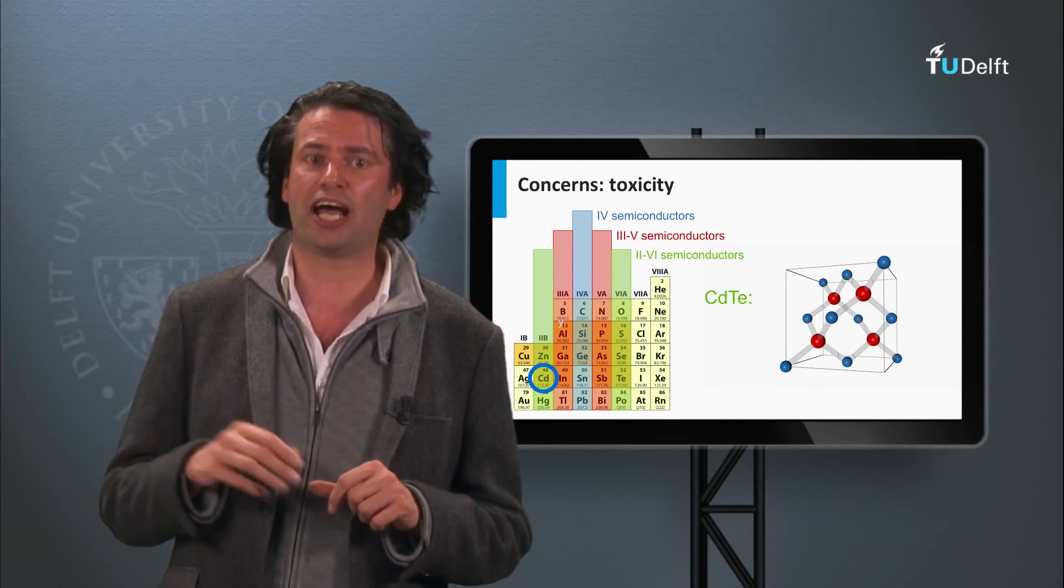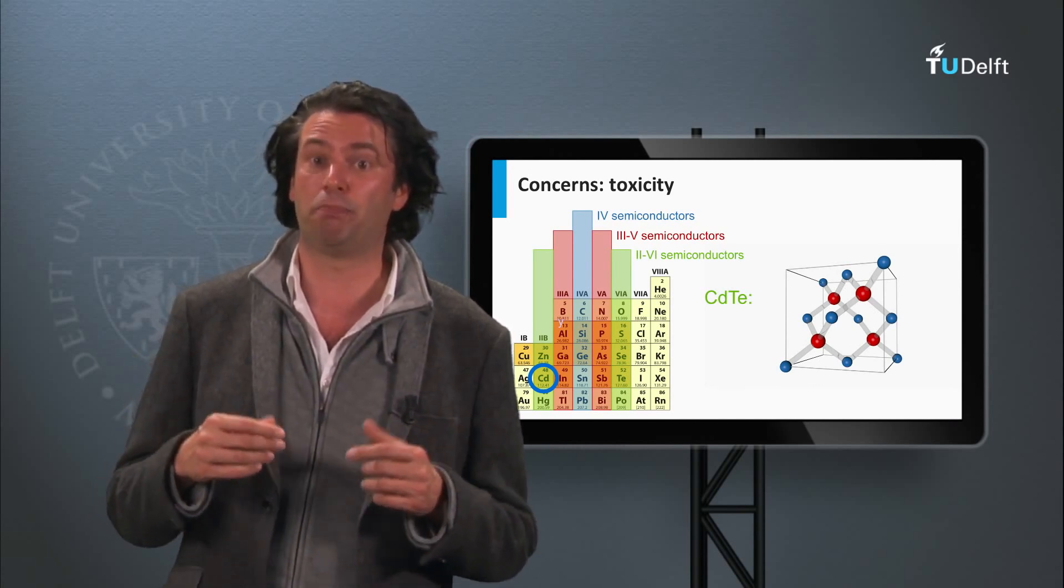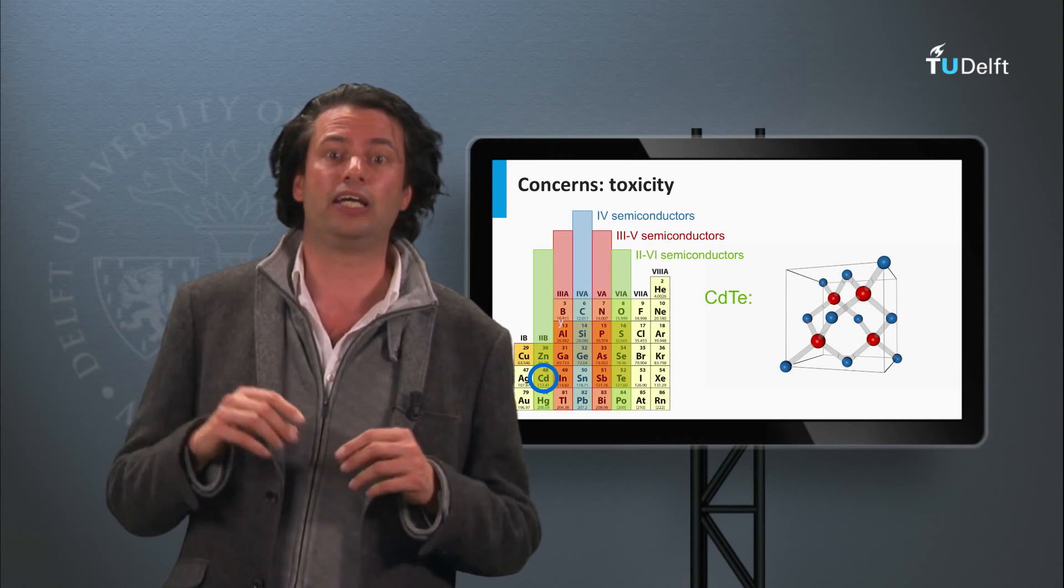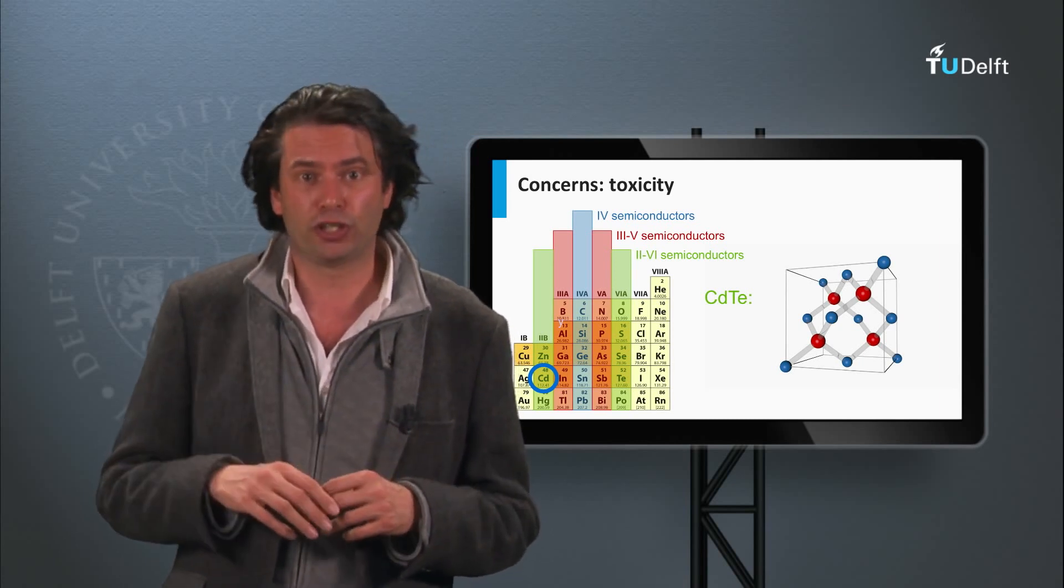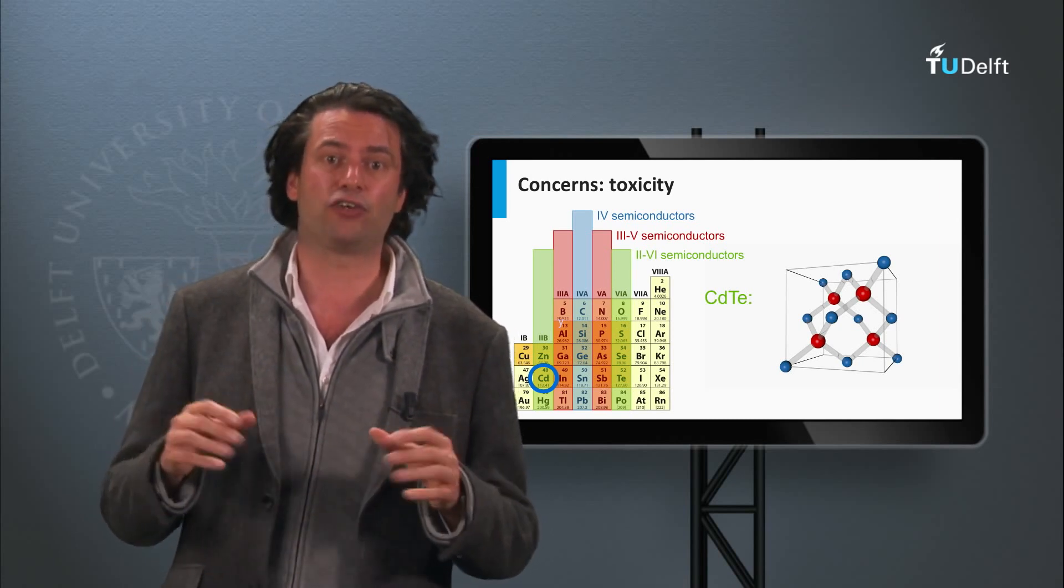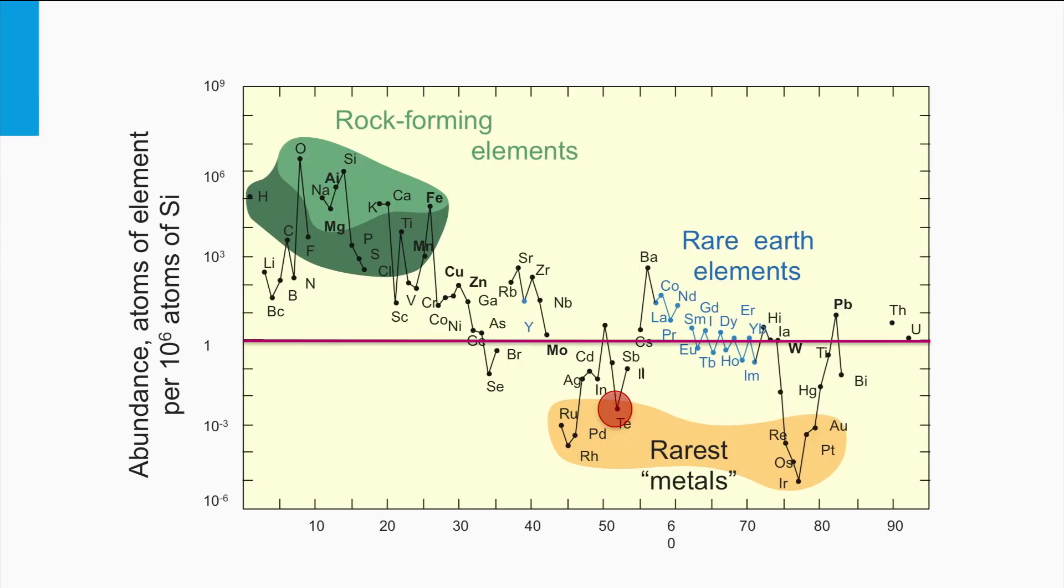For instance, First Solar has a recycling scheme in which a deposit of 5 dollar cents per watt-peak is included, which covers the cost for the recycling at the end of the module's lifetime. Maybe the biggest challenge for the cadmium telluride will be the supply of the tellurium.